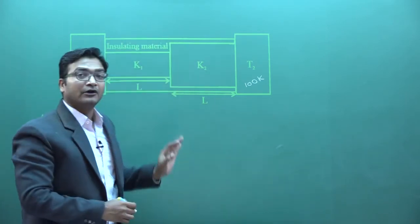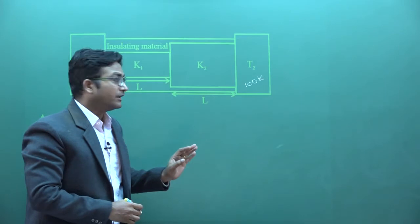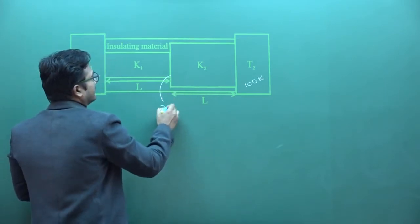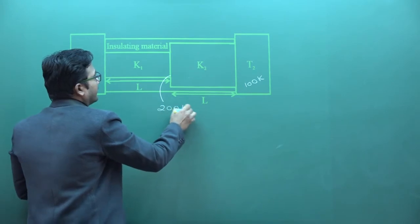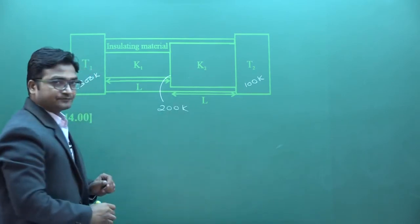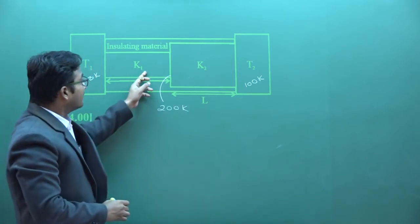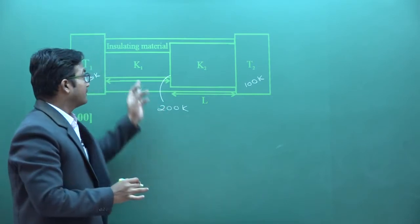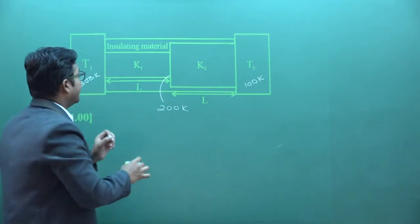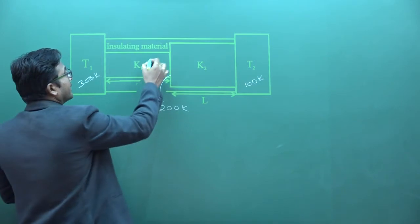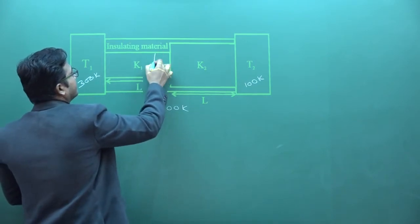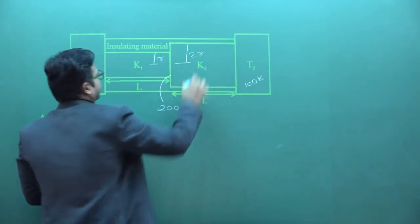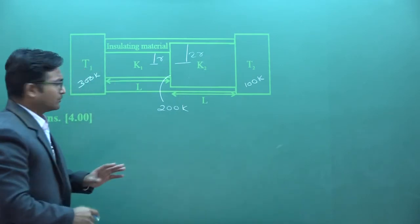The temperature at the interface is 200 Kelvin. We are asked to find the ratio K1 upon K2. Additional information: if the radius of the first rod is R, then the second rod's radius is 2R.